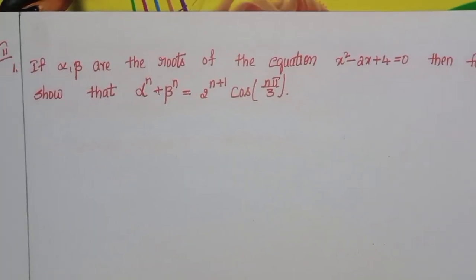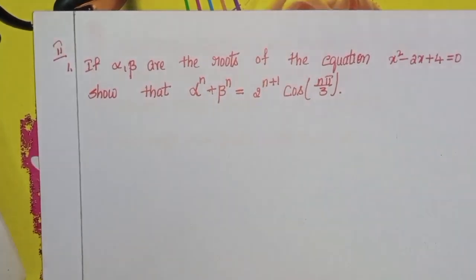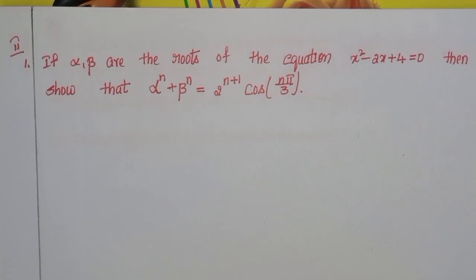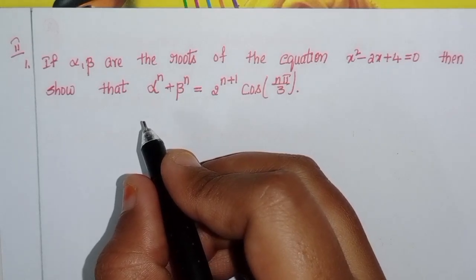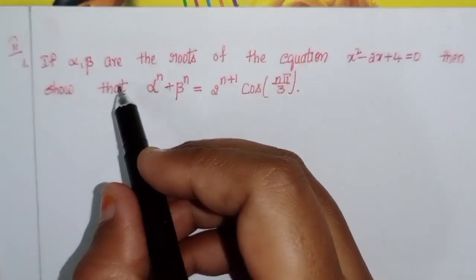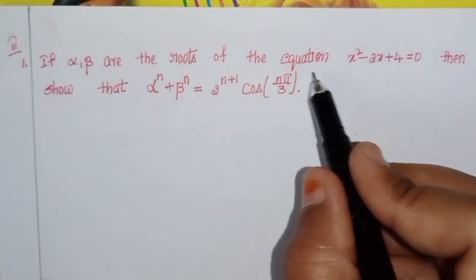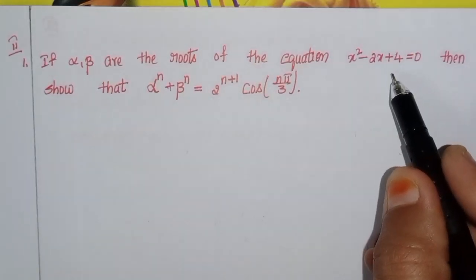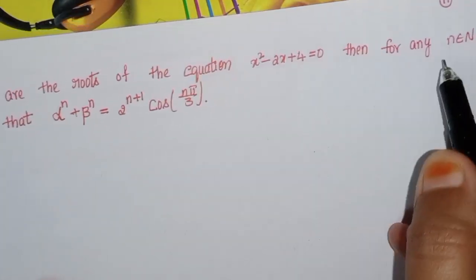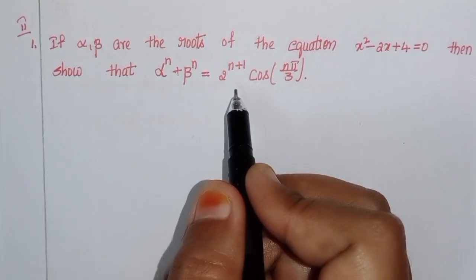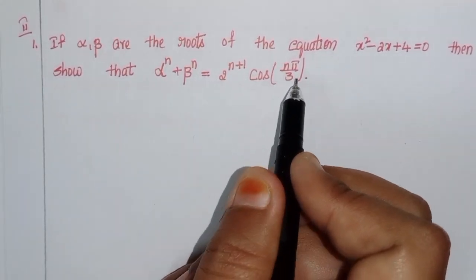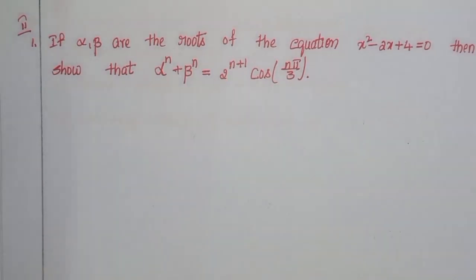My name is Jishahin, welcome back to our channel. Today we will discuss Intermediate Secondary 2A, Chapter 2, Exercise 2a, second problem — very important for seven marks. If alpha and beta are the roots of the equation x² - 2x + 4 = 0, then for any n belonging to natural numbers, show that alpha^n + beta^n = 2^(n+1) · cos(nπ/3).